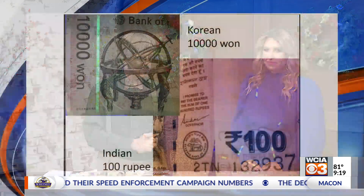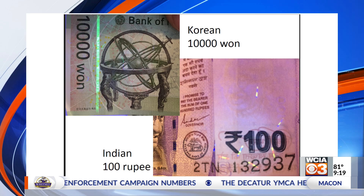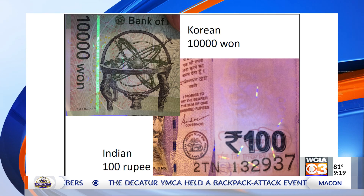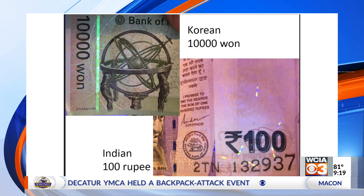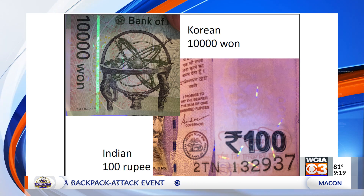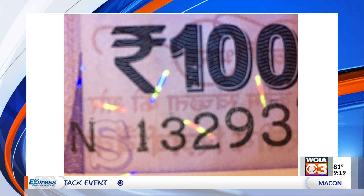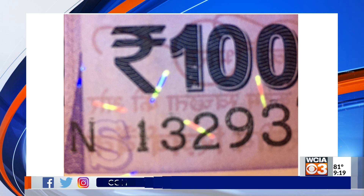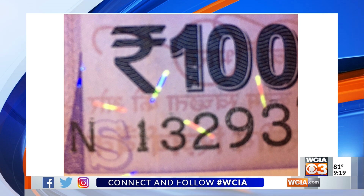Other currencies also use this technique, not just US currency. Korean currency has a bright stripe, and Indian rupees have little colored regions. If you zoom in, you can see that quite multiple colors come out when you shine ultraviolet light on them, which is pretty cool.